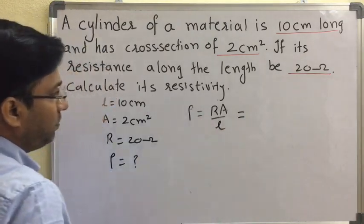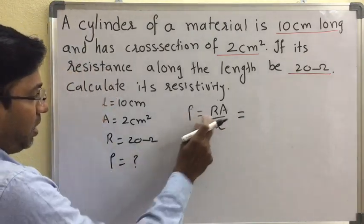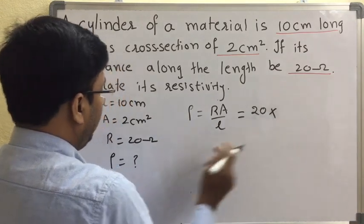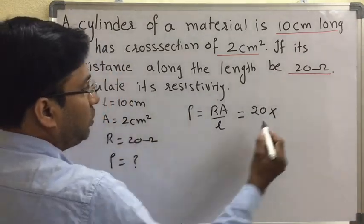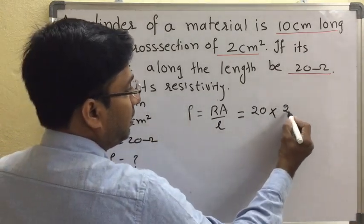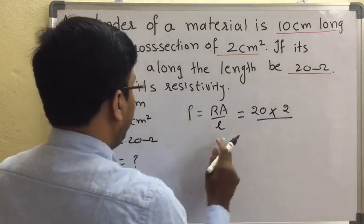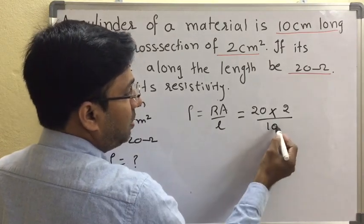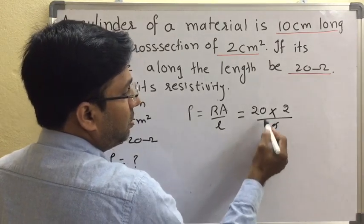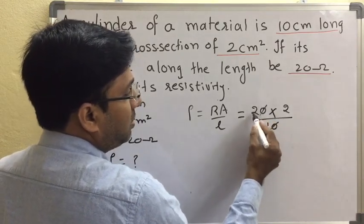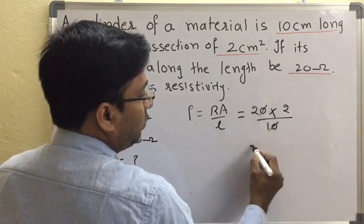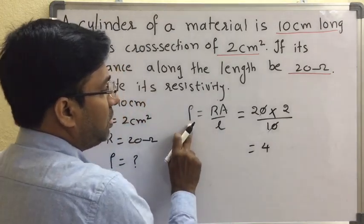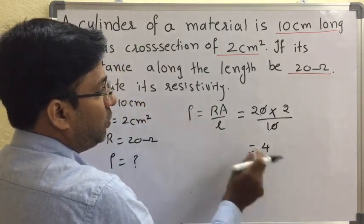So rho's value: R is 20, A is 2, and L is 10. Rho equal to 20 times 2 divided by 10. The zeros cancel, giving 2 into 2, that is 4. So resistivity is 4 in the corresponding units.